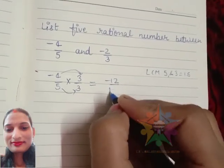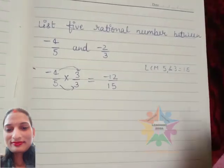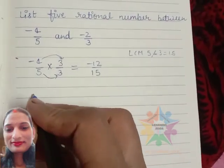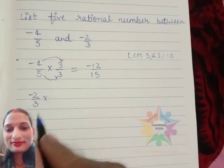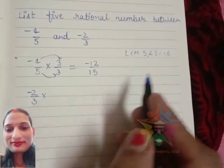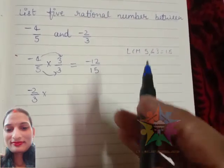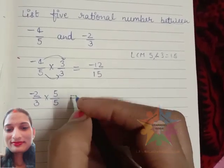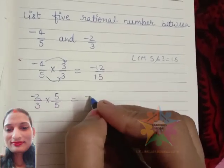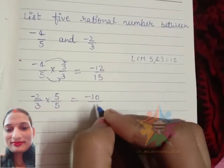For the second rational number, -2/3, the denominator is 3. 15 divided by 3 we get 5, and multiply by 5 in numerator and denominator. We get -10/15.